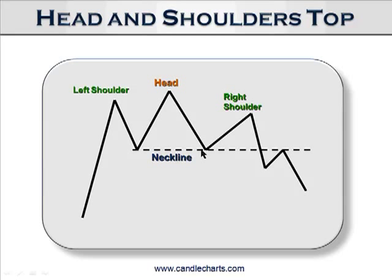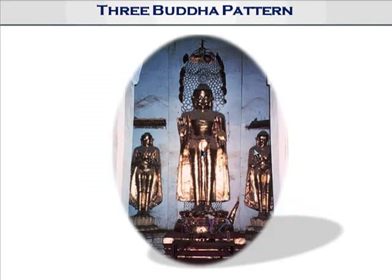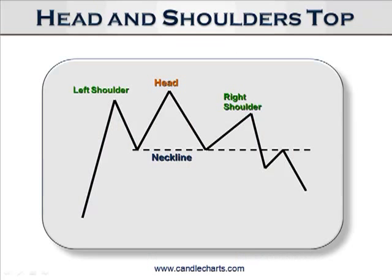We call this a head and shoulders in the West, but in the East they actually call it a three Buddha pattern. This has been around since the late 1700s based on my Japanese translations. The reason it's called the three Buddha pattern is because there's a middle Buddha and two smaller Buddhas, or saints, to the left and right of the main Buddha. Same pattern, different sides of the world — just reflects how the same technical patterns can emerge on opposite sides of the world, because people are people and we all have the same emotions: fear, greed, hope. Anyway, this is a head and shoulders top.